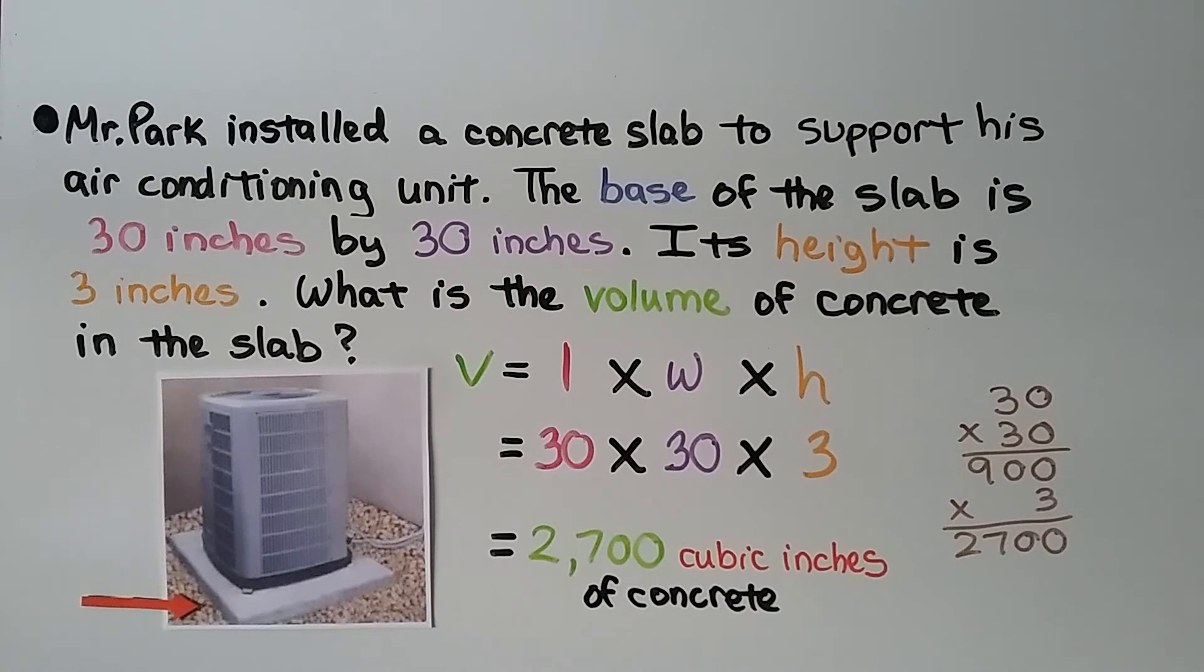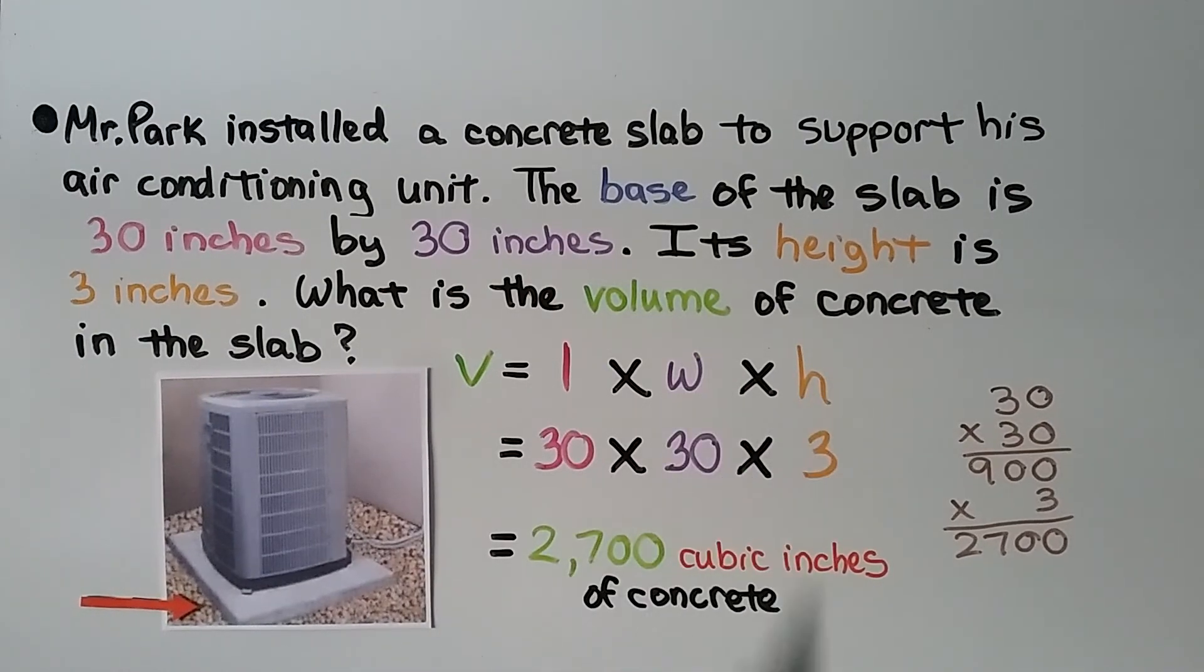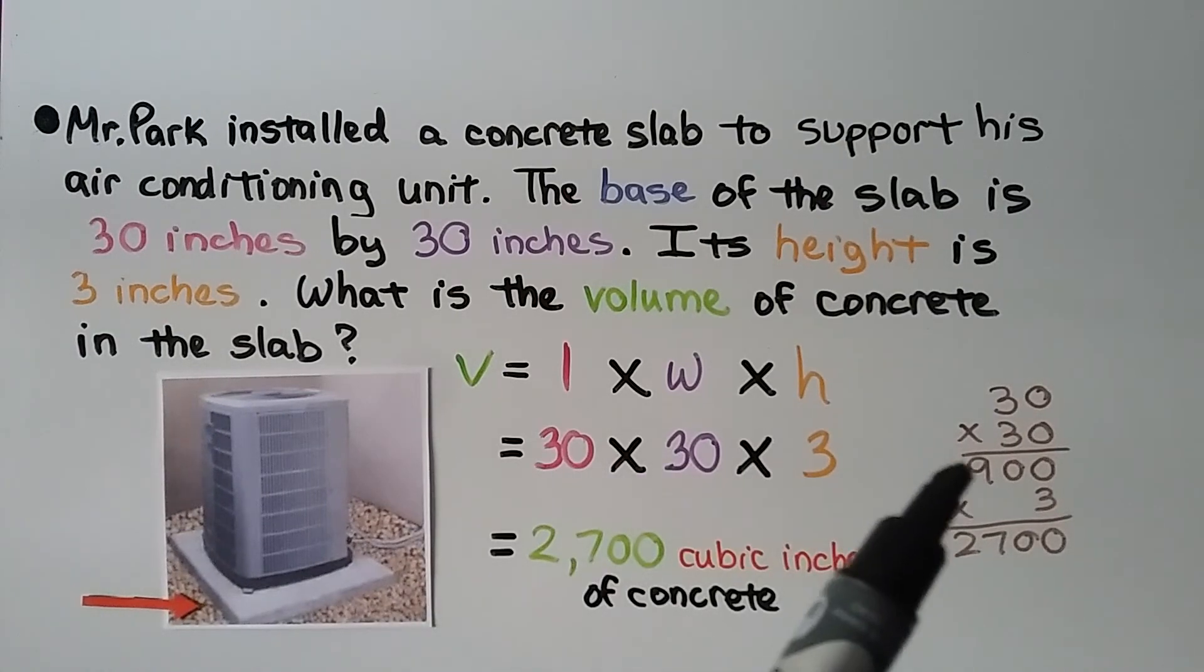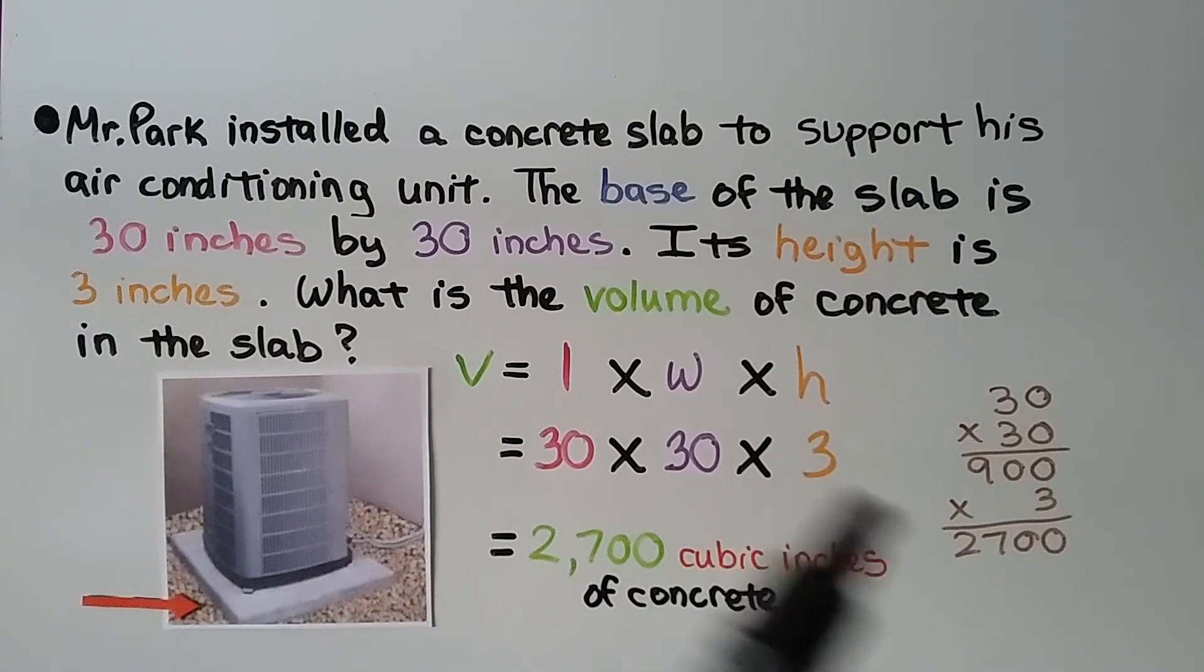Mr. Park installed a concrete slab to support his air conditioning unit. And the base of the slab is 30 inches by 30 inches. Its height is 3 inches. What is the volume of concrete in the slab? We use volume equals length times width times height. It's 30 inches by 30 inches for the base. 30 times 30 is 900. And we multiply that by the height, 3 inches, we get 2,700 cubic inches of concrete.